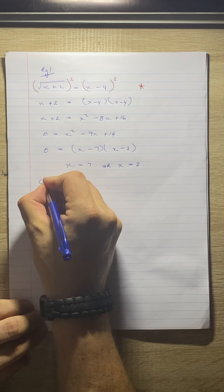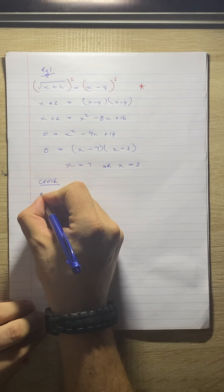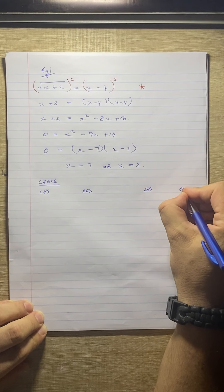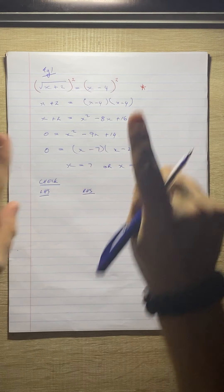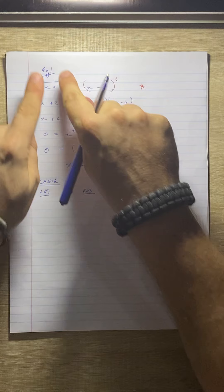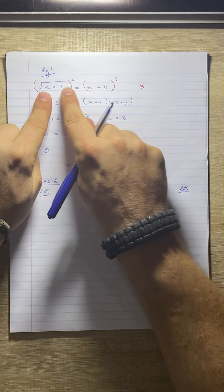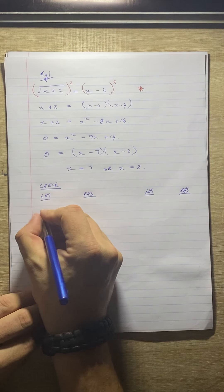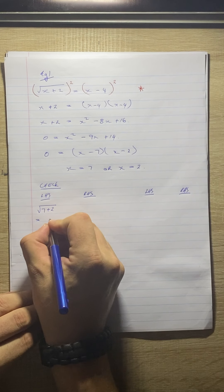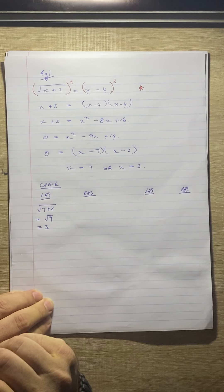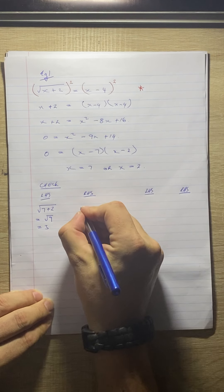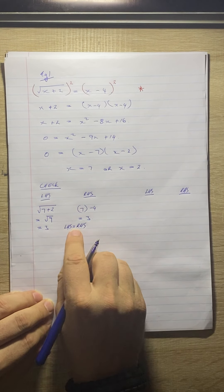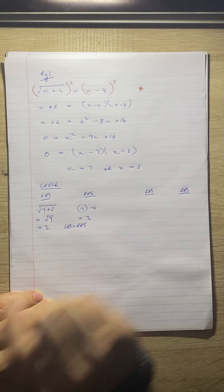I need to do a check — I'm going to check the left-hand side and the right-hand side of the equation for both solutions. Coming back to the star, just before I squared it, I'm going to use the original equation. On the left-hand side we have the square root of x plus 2. Substituting x equals 7, we get the square root of 7 plus 2, which is the square root of 9, which gives us 3. On the right-hand side, substituting 7 we get 7 minus 4 which gives us 3. The left-hand side equals the right-hand side, so 7 is a solution. Now I need to check x equals 2.